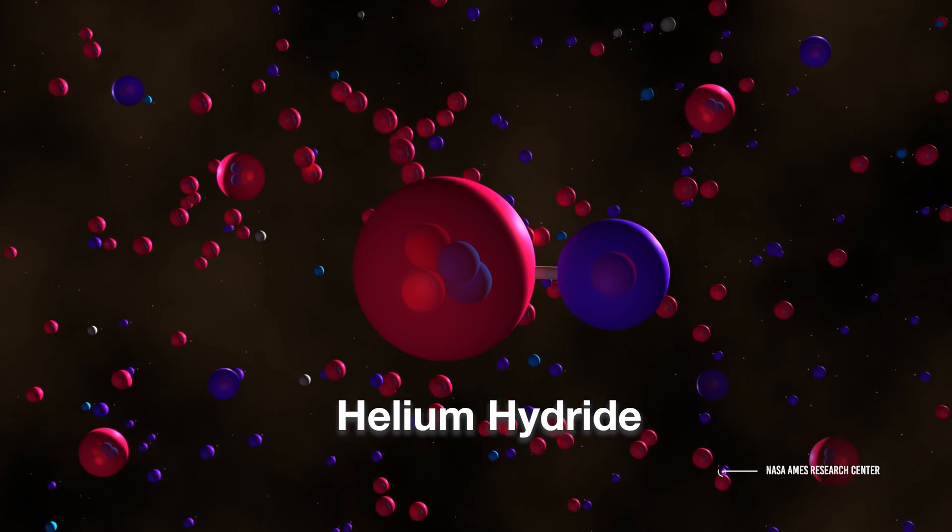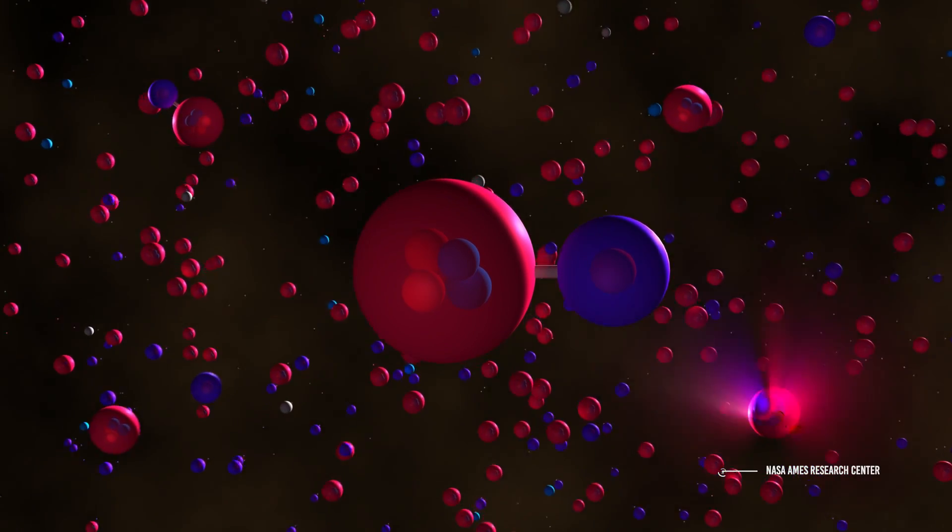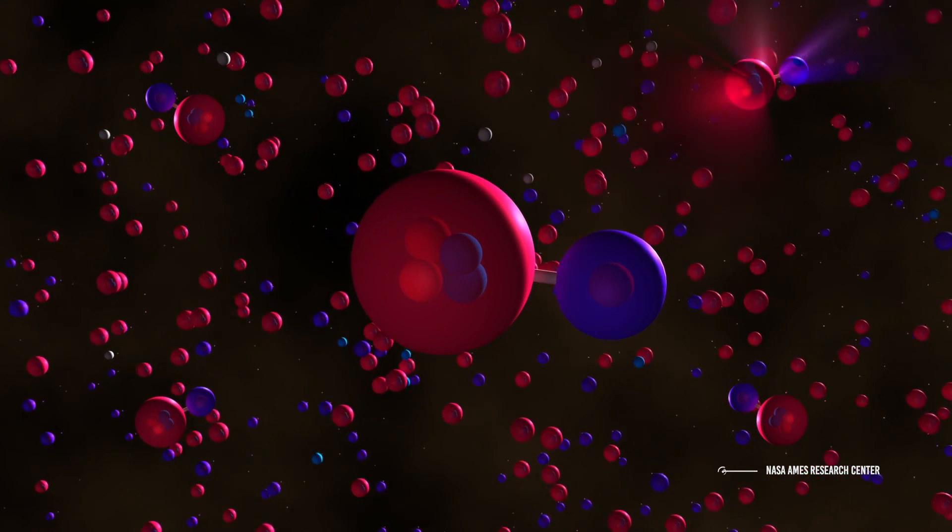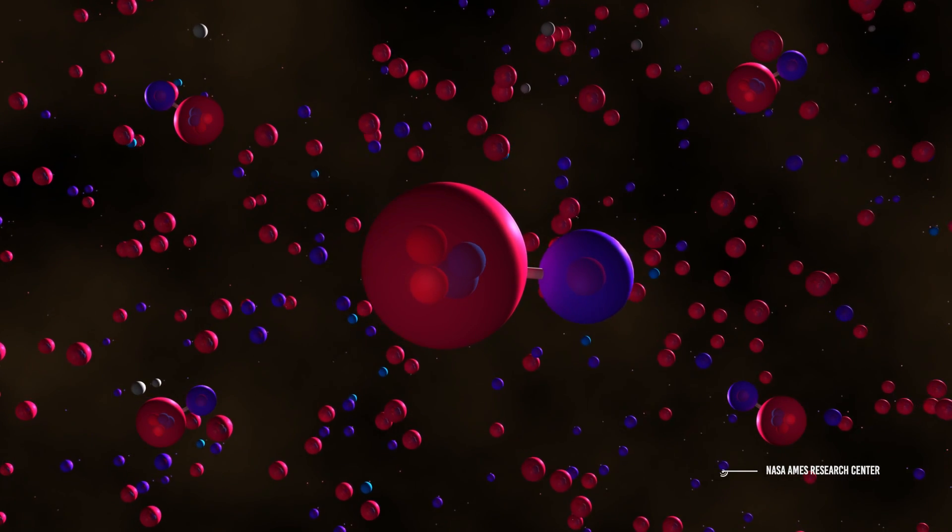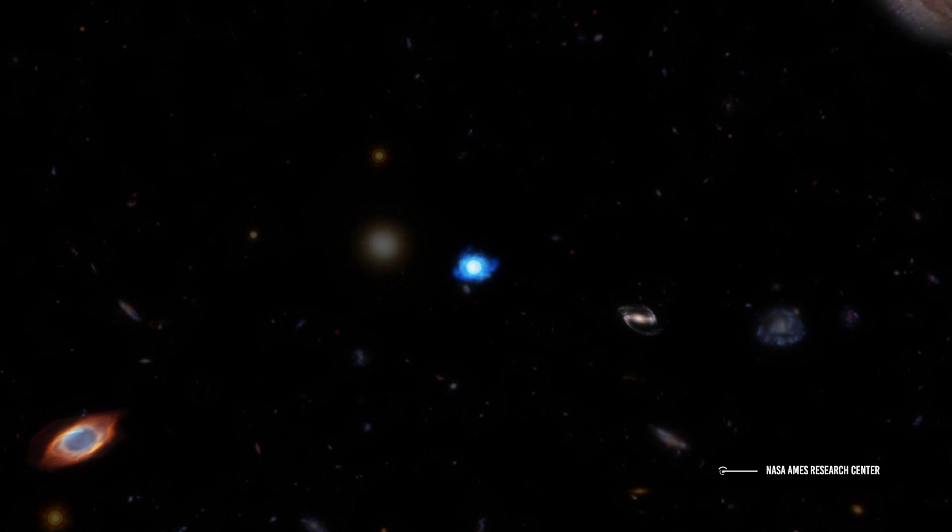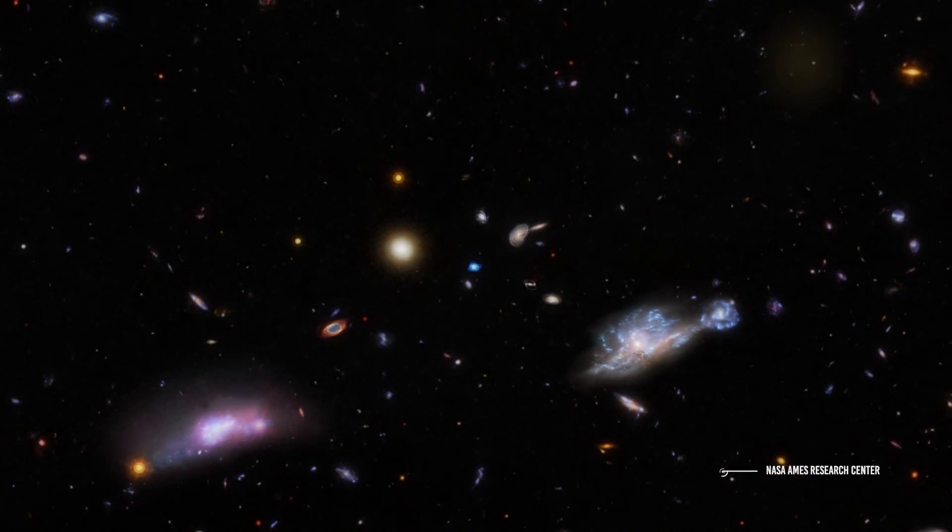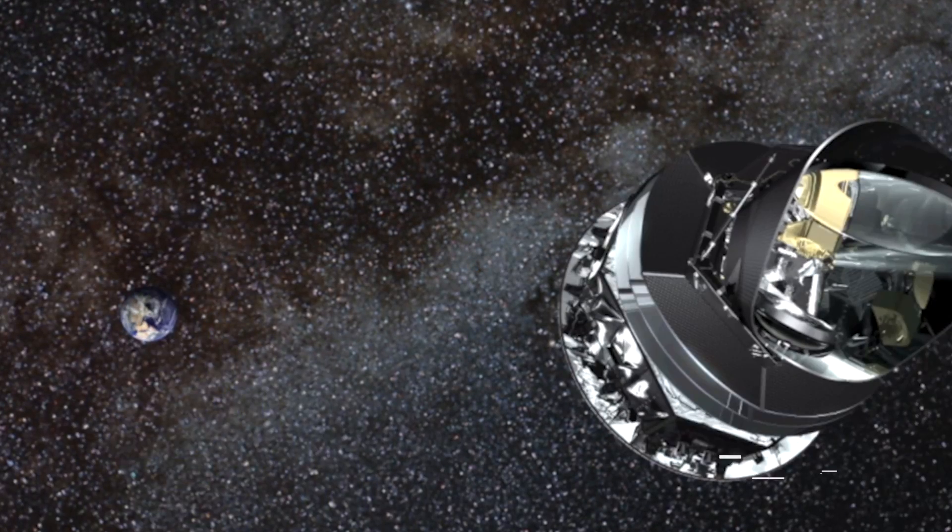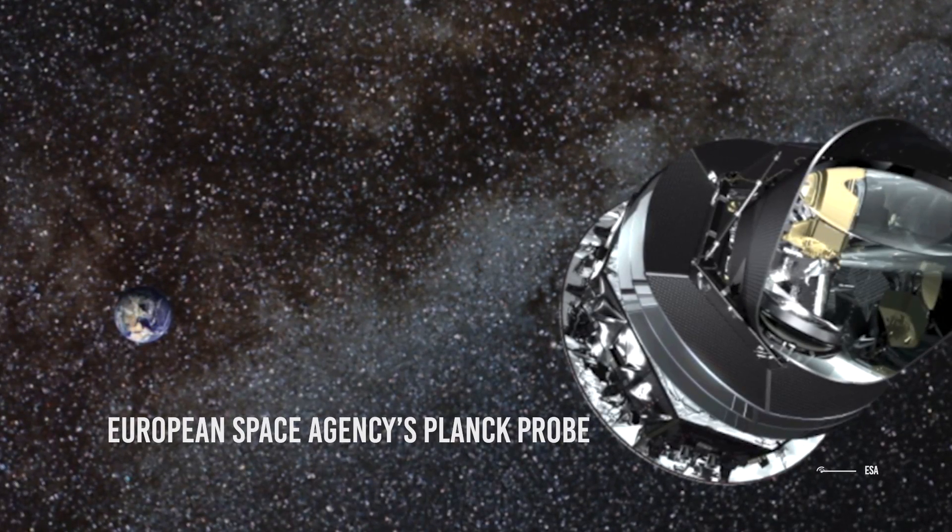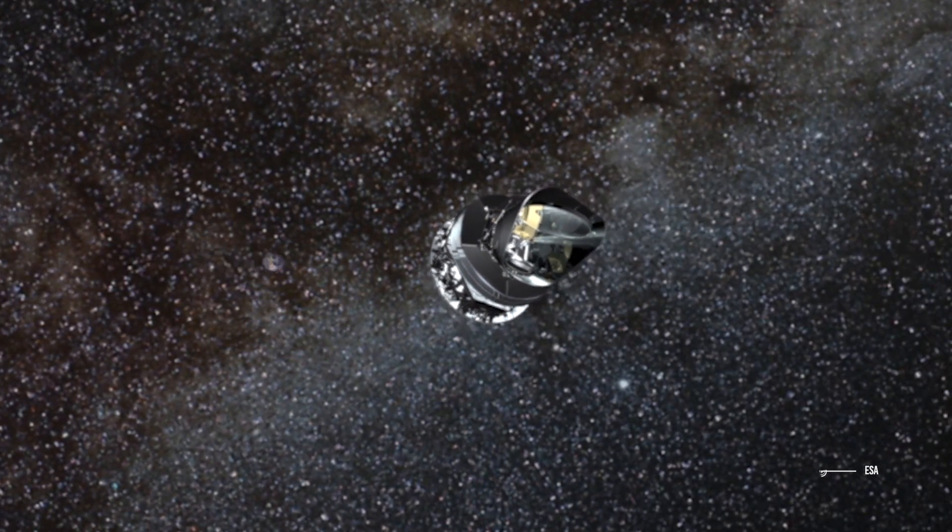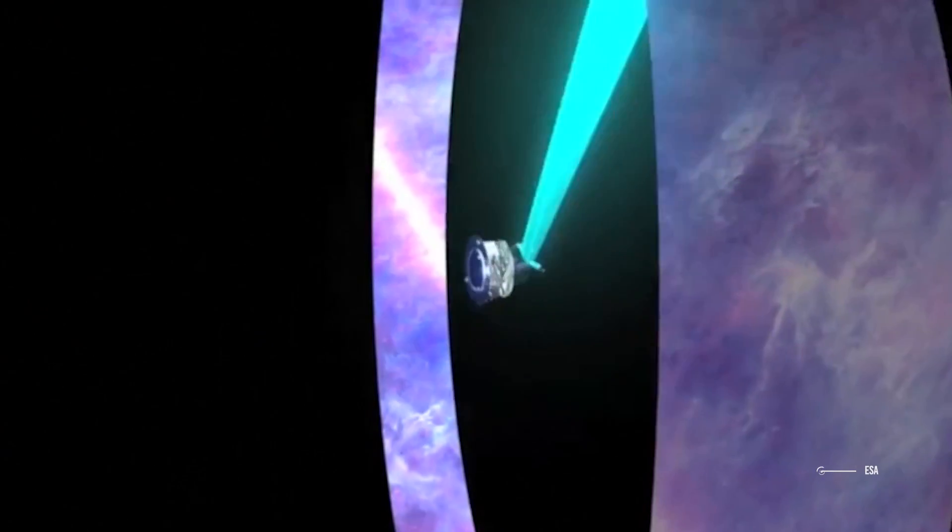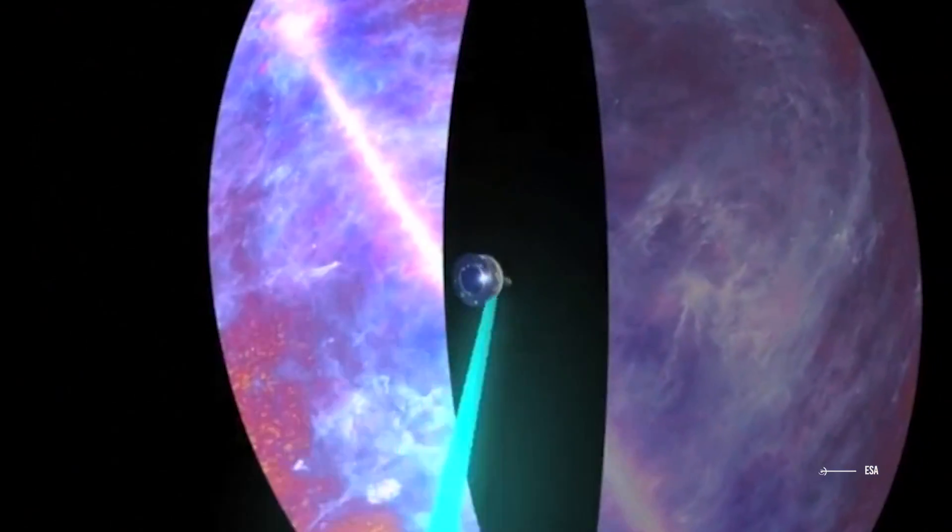When the universe cooled about 400,000 years after the Big Bang, the first atoms, neutral hydrogen, released their photons in a burst of electromagnetic radiation that scientists can still see today. This cosmic microwave background, or CMB, was first detected in 1964. Today we use complex tools like the European Space Agency's Planck probe in order to detect minute fluctuations which create a snapshot view of the distribution of matter and energy in the young universe.